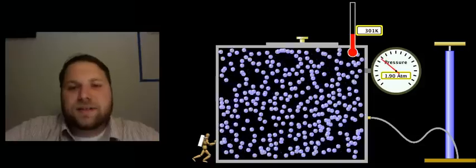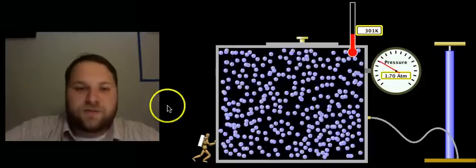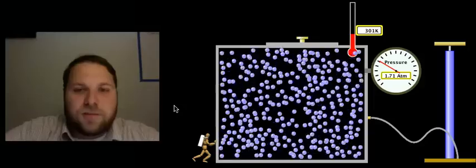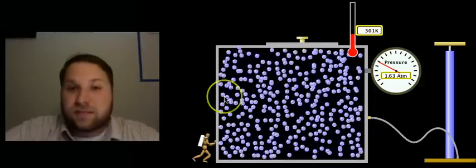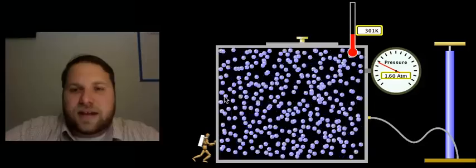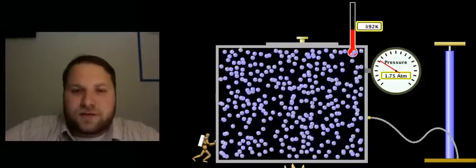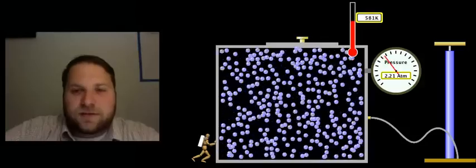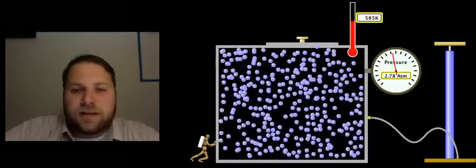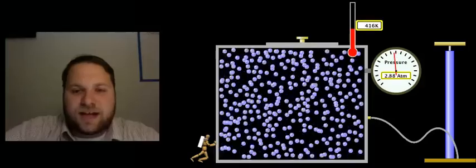This also makes sense because part of the pressure is the force with which those particles are hitting the wall. The faster they're moving, that is the higher the temperature, the harder they're going to hit that wall. So if I increase the temperature, that is increase the speed of those particles, pressure will go up. If I decrease their speed, pressure goes down.